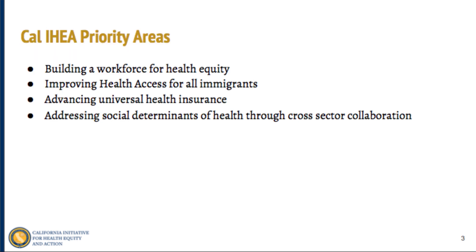I want to start by talking about priority areas. Anytime you're advocating, you're trying to push forward a mission or goal — think of these as not only the organization's goals but your goals as well. When talking to a legislator or staffer, these priorities include: building a workforce for health equity, improving health access for all immigrants, advancing universal health insurance, and addressing social determinants of health through cross-sector collaboration.